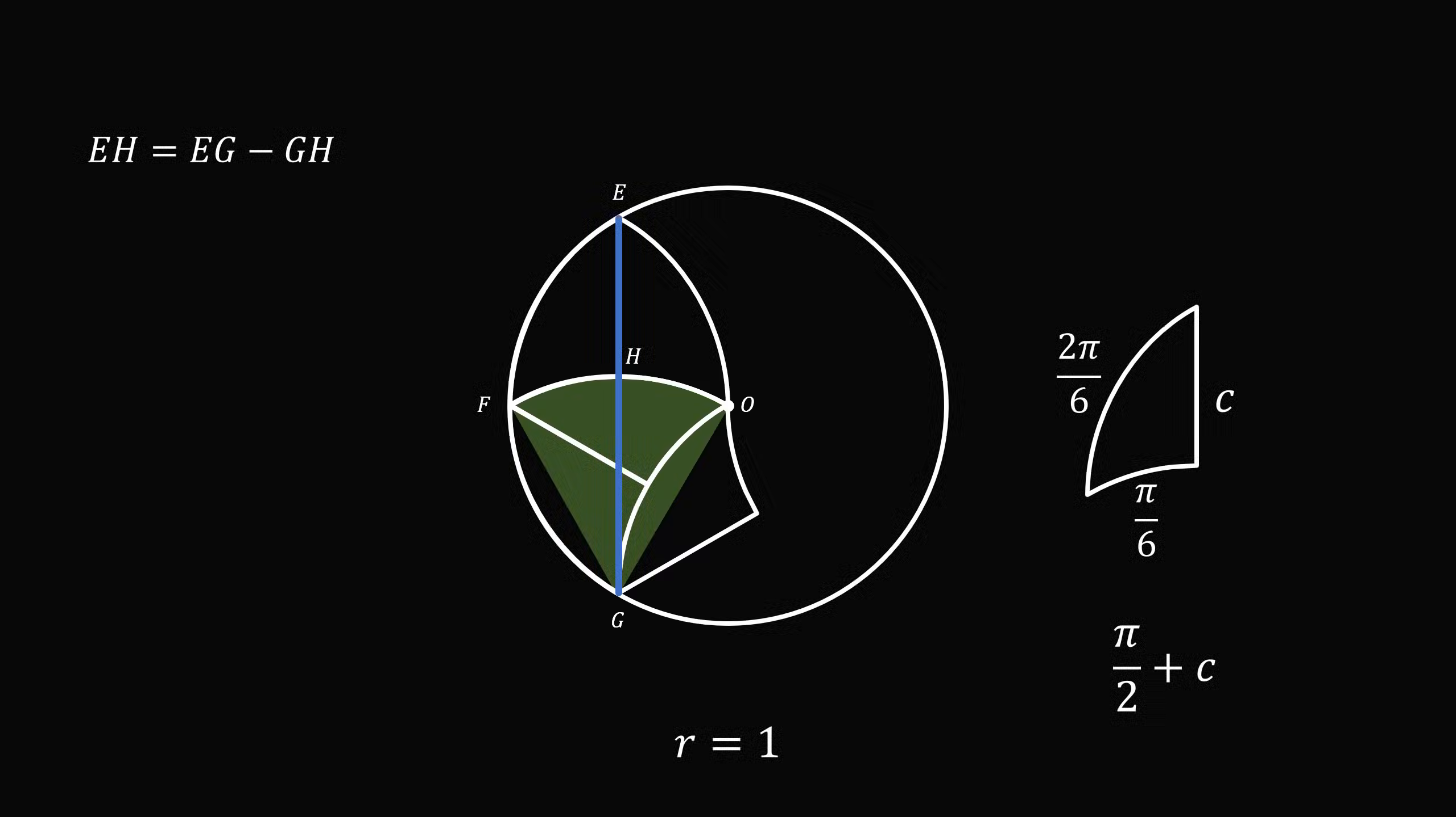Furthermore, g, f, h, o is a circular sector. So, g, f equals g, h equals g, o, and all of these are equal to 1. Therefore, g, h is equal to 1.